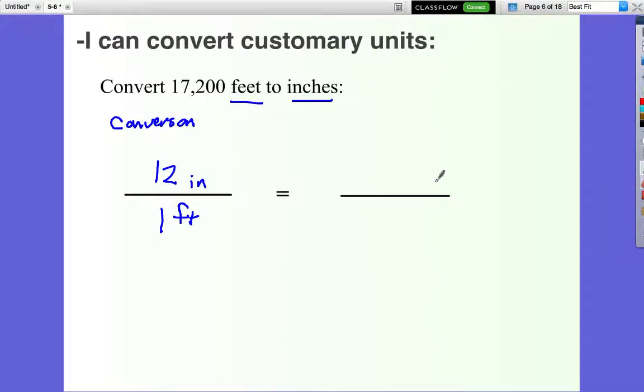Now the question is if I have inches on top, I need inches over here. Feet on bottom, I need feet over here. This has to be the same. If I have cats, I have to have cats. If I have boys, I have to have boys. The numerators have to be the same and the denominators, otherwise it is not a proportion.